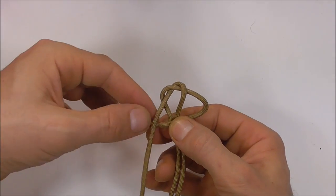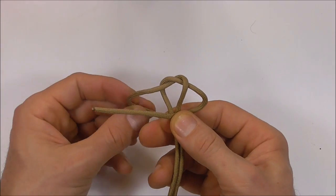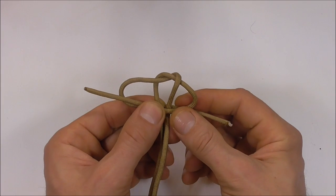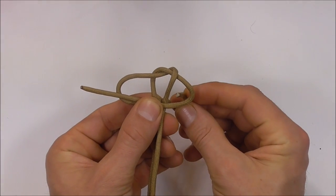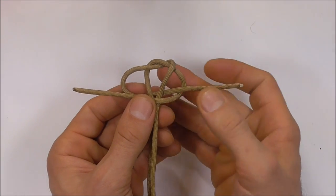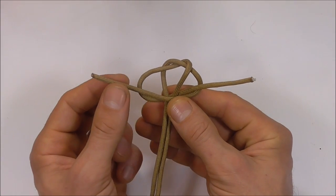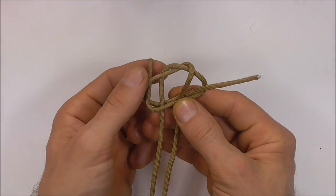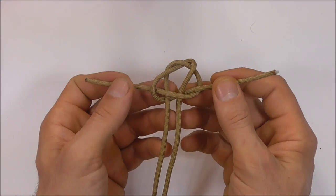Then I'm going to take this left strand behind the two center strands and then up through that right loop. And the left strand I'm going to take down through the left loop.